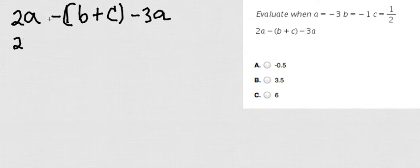So I'm going to go ahead and the first step is to get rid of the parenthesis. So I have 2a, negative times positive, so negative b, negative times positive, negative c, minus 3a.